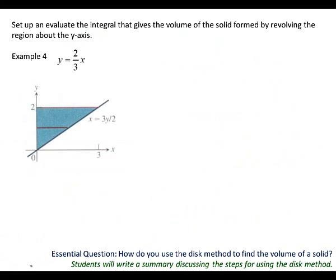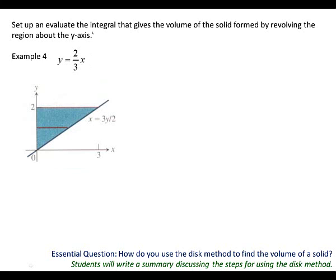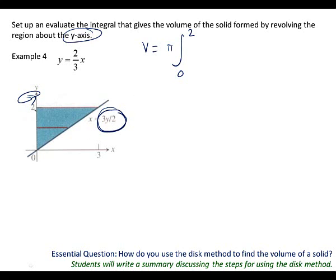Next one: where are we revolving? The y-axis. It also looks like a cone. Is the region touching the axis of revolution? Yes. They actually set it up for us and even provided the limits. What do we always start a revolution with? Pi. What are the limits?